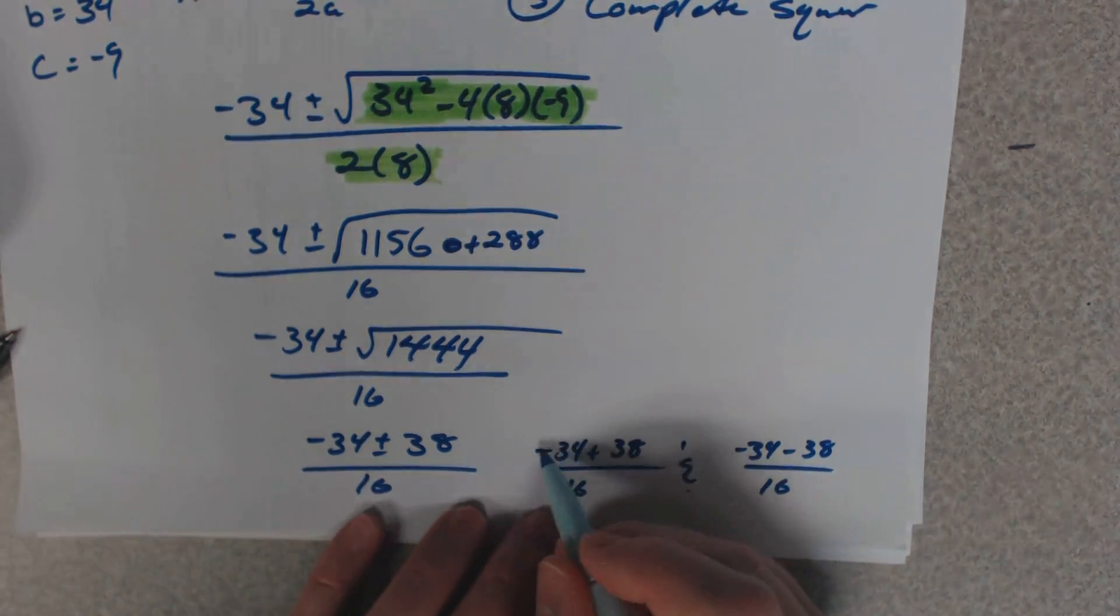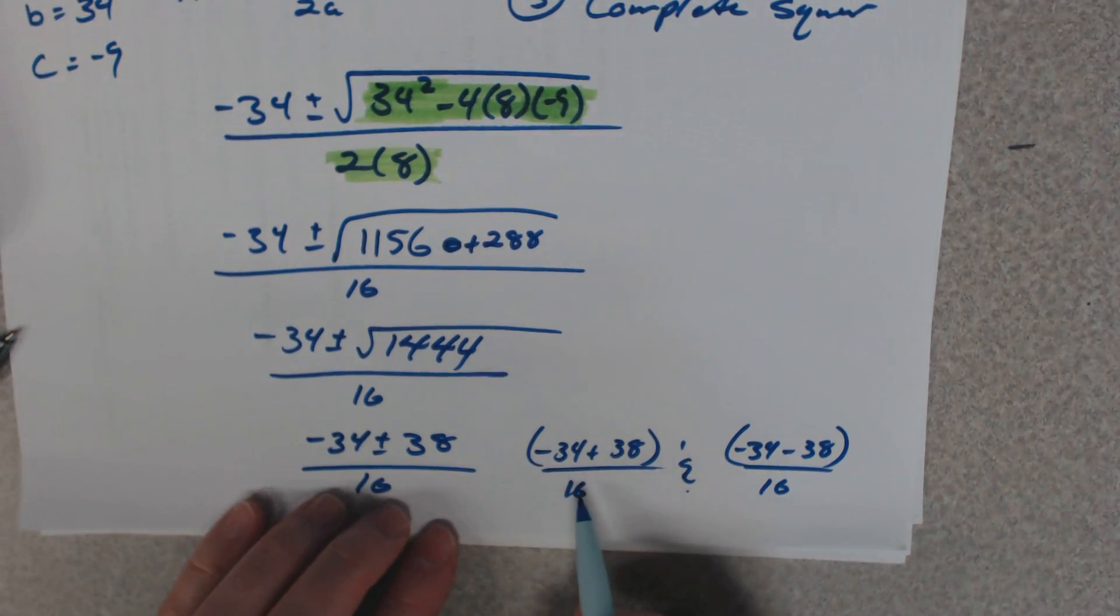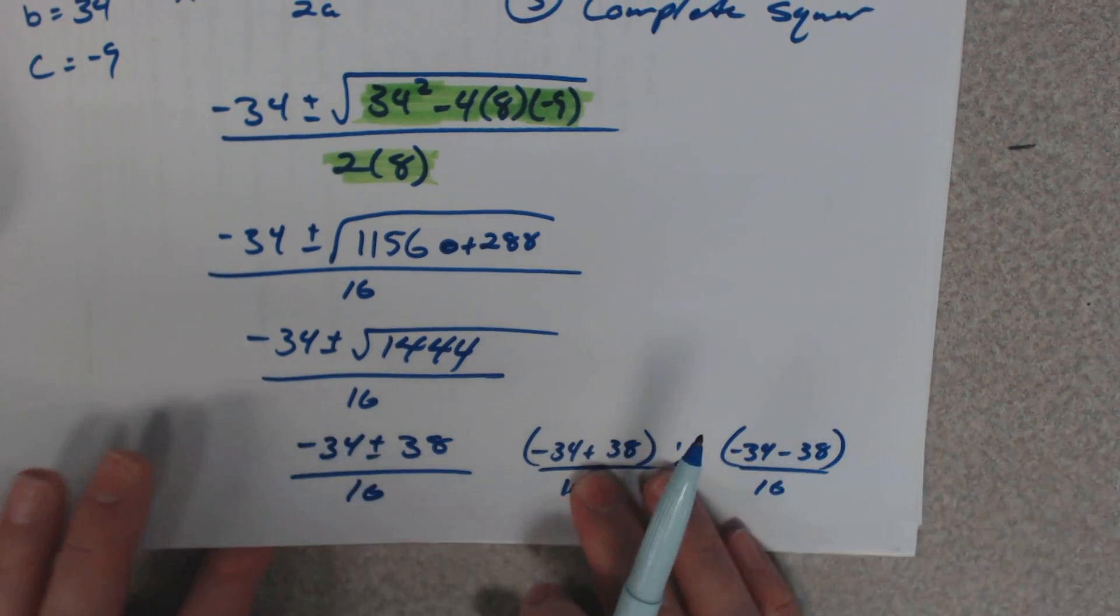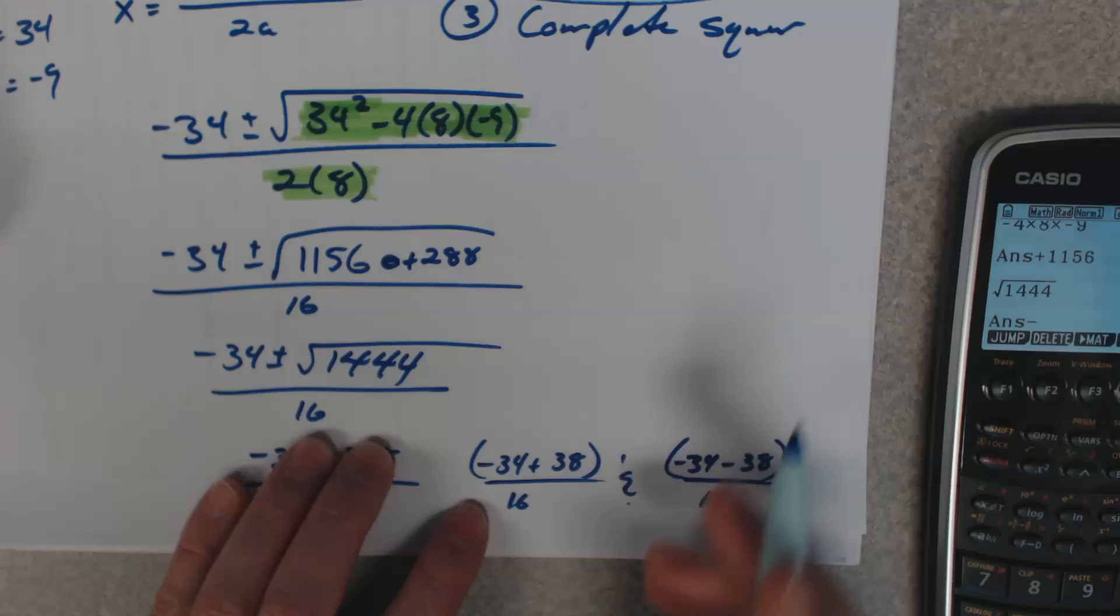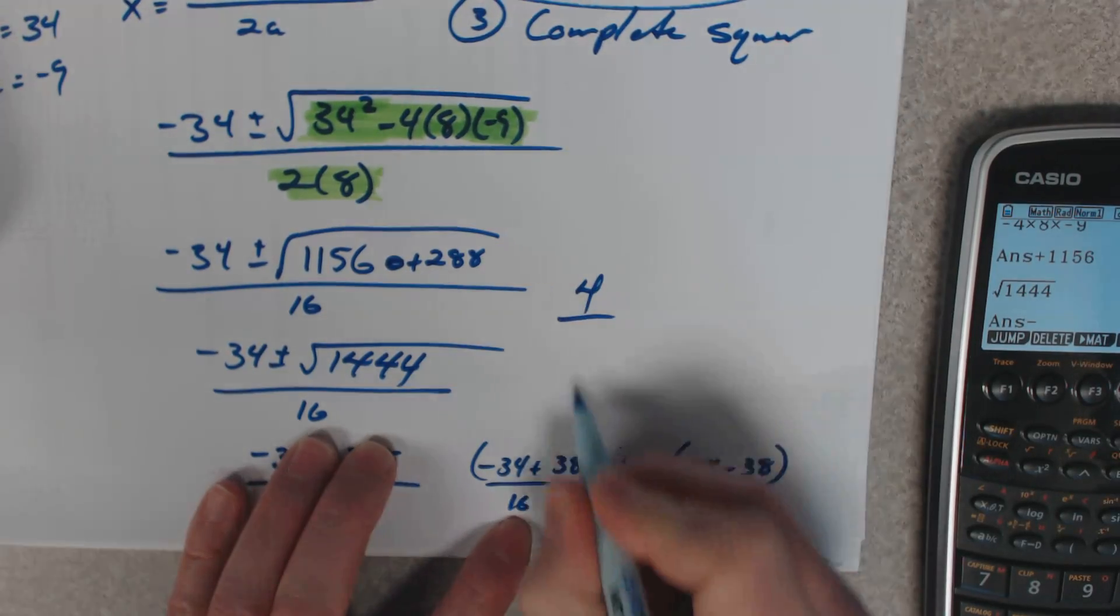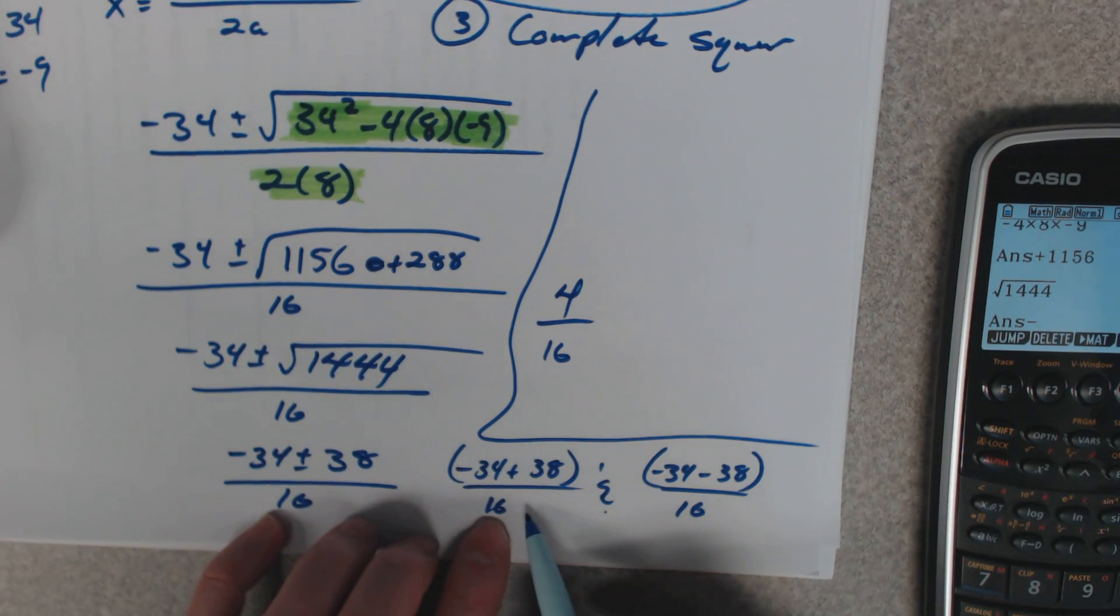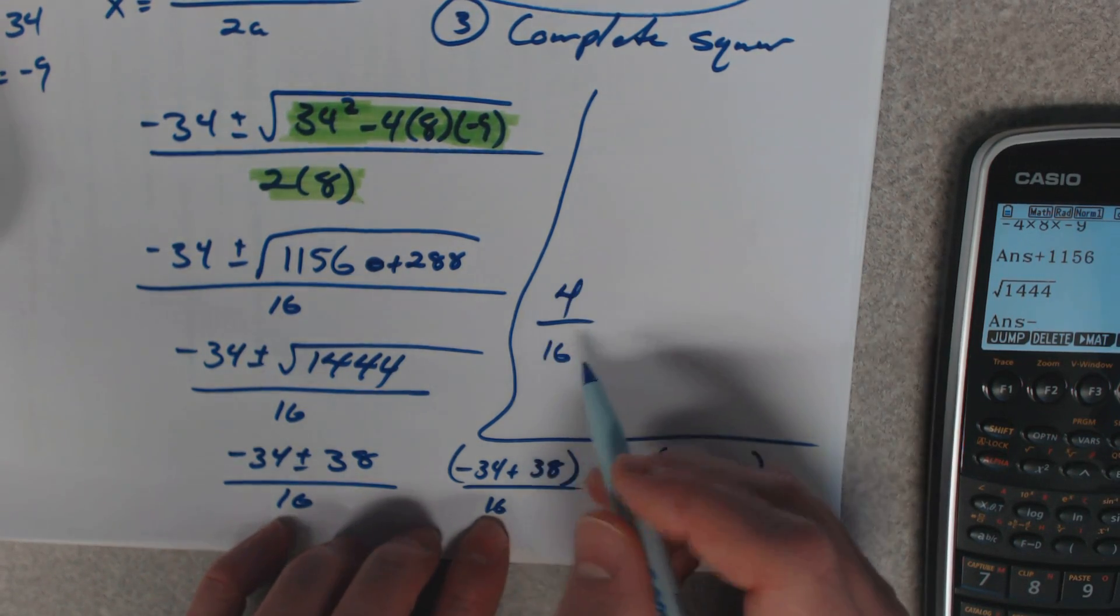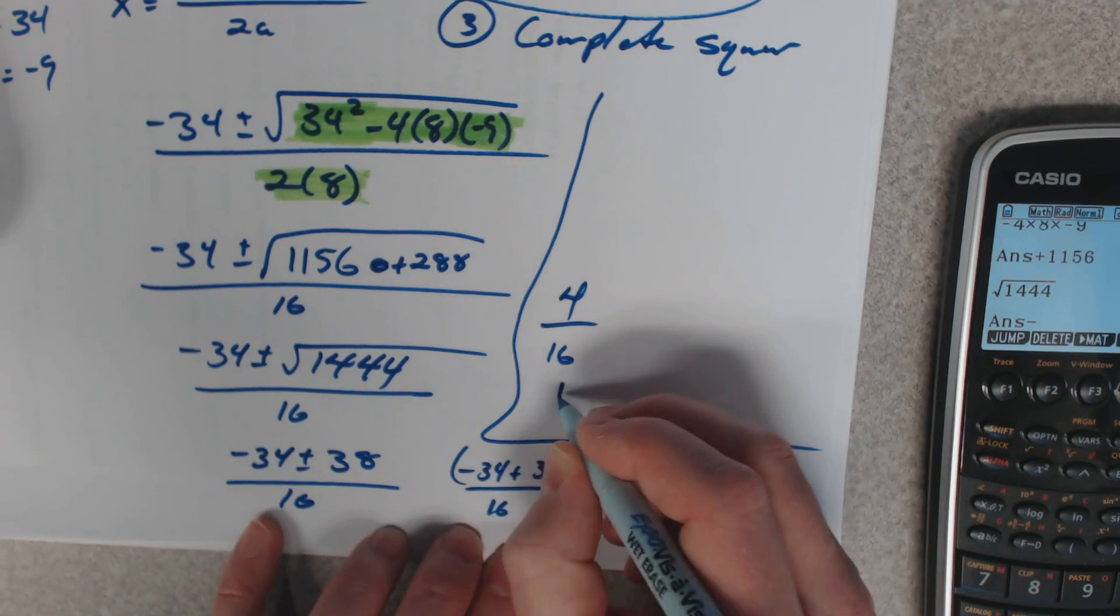And if I plug this in my calculator, you've got to make sure you do the top first, or you make sure if you're going to do it all at once, you put the top in parentheses. I'm going to do it piece by piece. I'm going to do the top first. So the top, negative 34 plus 38 would be 4 over 16. So 4 over 16, and 4 goes into 16 four times, so 4 goes into itself once. So that's the same thing as 1 fourth.